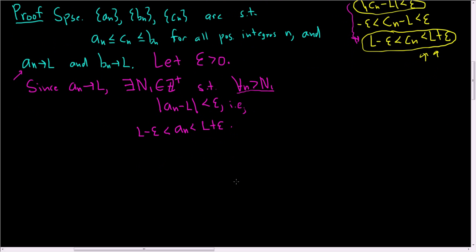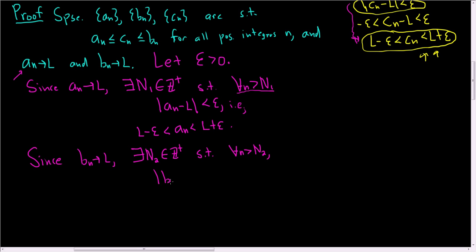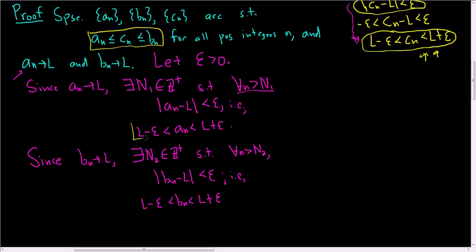Now let's use the fact that b_n converges to l. Since b_n converges to l, there exists a positive integer — let's call it N_2 — such that for all little n greater than N_2, the distance between b_n and l is smaller than epsilon. This is equivalent to saying that l − epsilon < b_n < l + epsilon. So we have a couple of conditions here; I'm going to circle them.